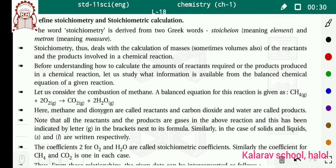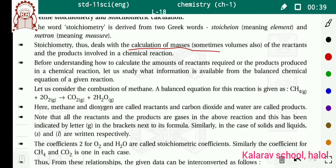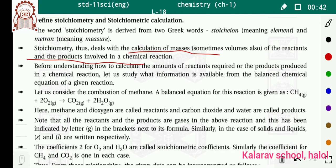Stoichiometry deals with the calculation of masses, and sometimes volumes, of the reactants and products involved in a chemical reaction. Matlab ki, jo chemical reaction ho raha hai, us mein jo reactant aur product involve ho raha hai, uske masses aur volume calculate karne ke liye hum stoichiometry ka use karte hain.